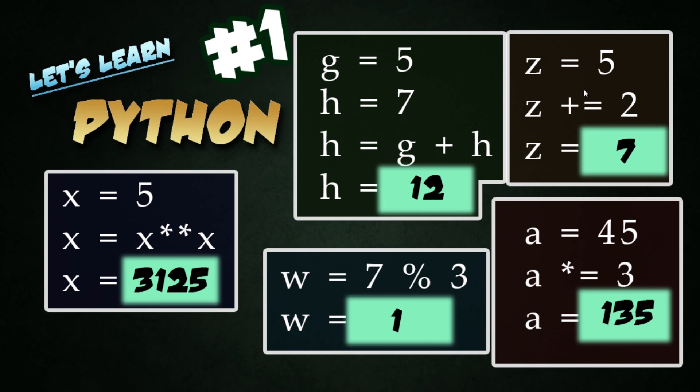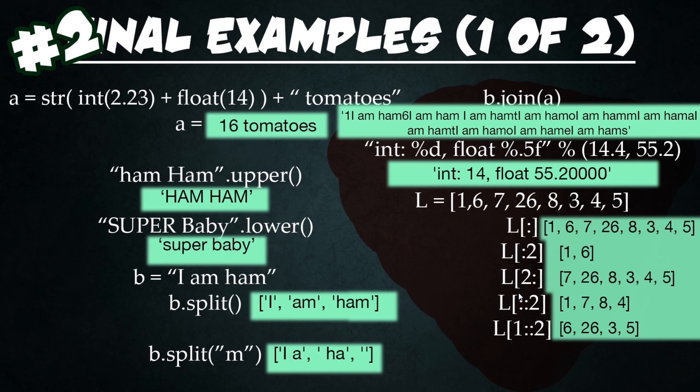You'll find yourself using these operands of plus equal and times equal very frequently. Next we have lesson number two. This is just doing a simple addition and then combining it with the string of tomatoes. So it's saying int of 2.23, which is going to round down to 2, and then a float value of 14, which doesn't change the value at all, add them together to give us 16, and then convert that into a string and add it to tomatoes.